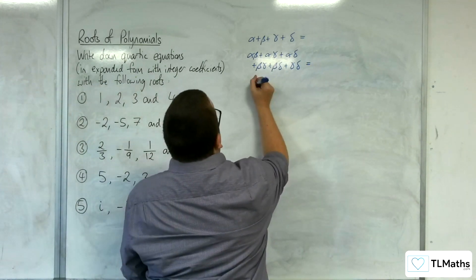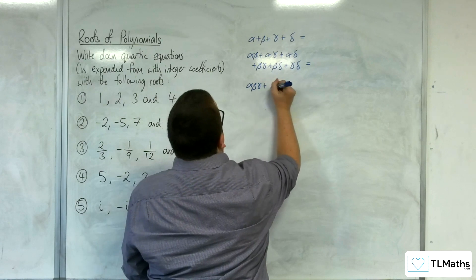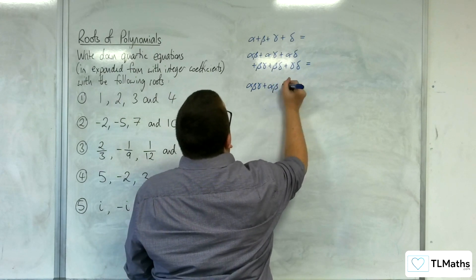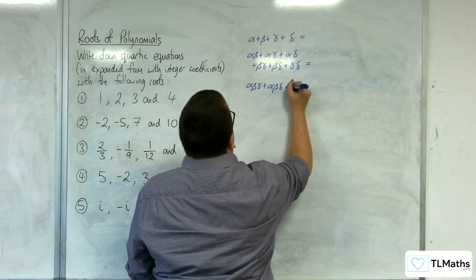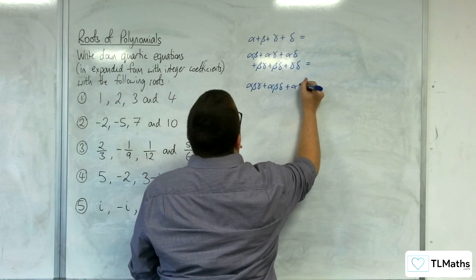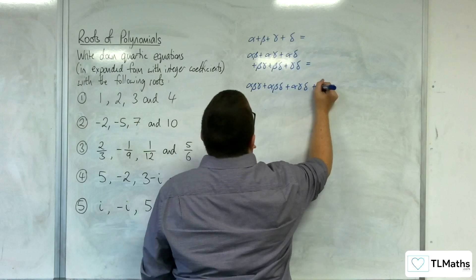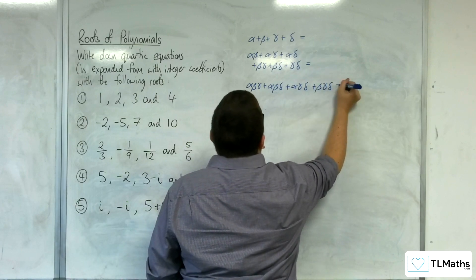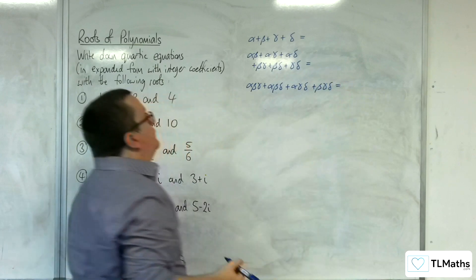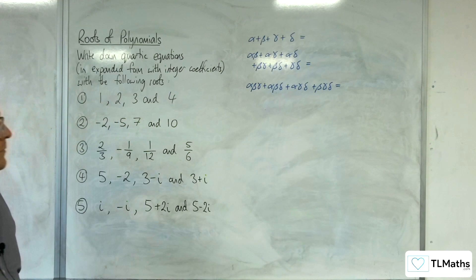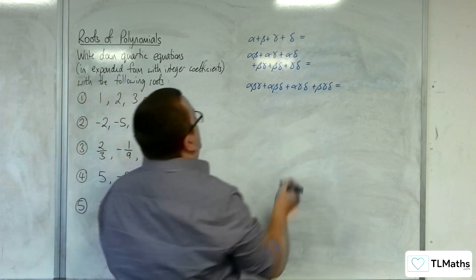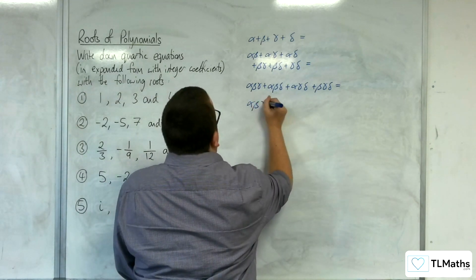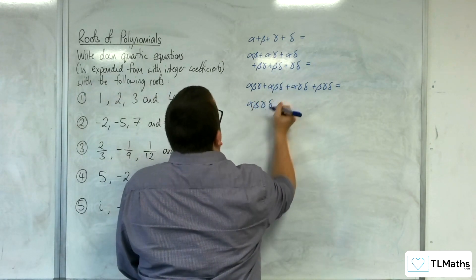Then we've got alpha beta gamma plus alpha beta delta plus alpha gamma delta plus beta gamma delta — the sum of the product triples. And finally, we're going to have alpha beta gamma delta — the product of all four roots.